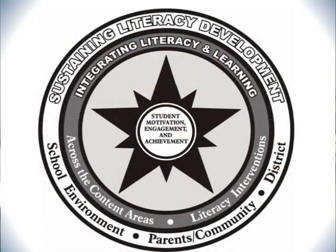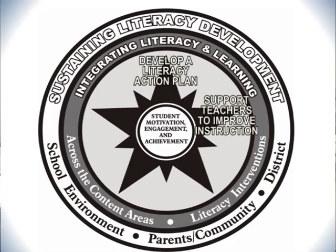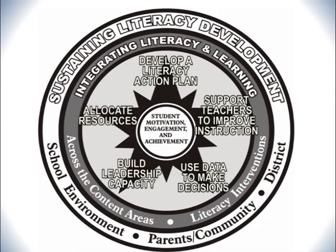We've written a rubric for each of those six goal areas. The star points are what we call action points of the model — what leaders need to know and be able to do to implement a literacy-rich program in a middle or high school. They need to develop and implement a plan, support teachers to improve instruction, use data to make decisions, build leadership capacity, and allocate resources for a literacy improvement effort. That's the total picture of the model.